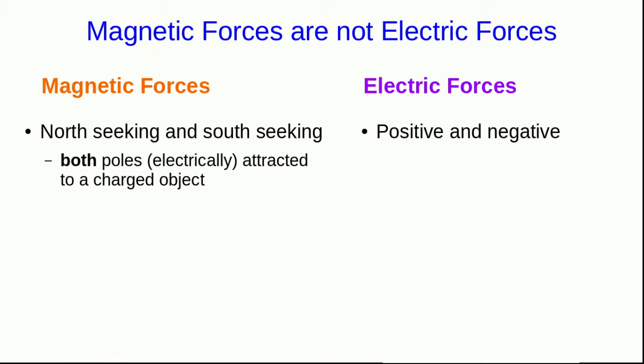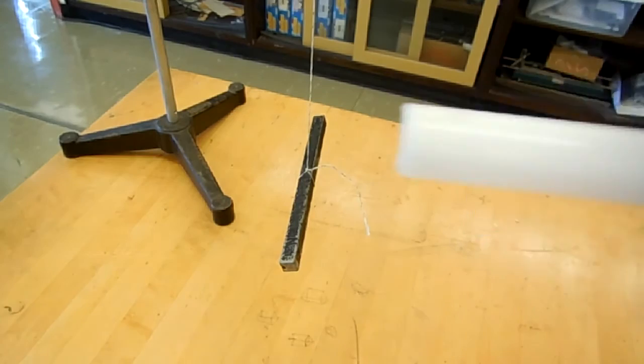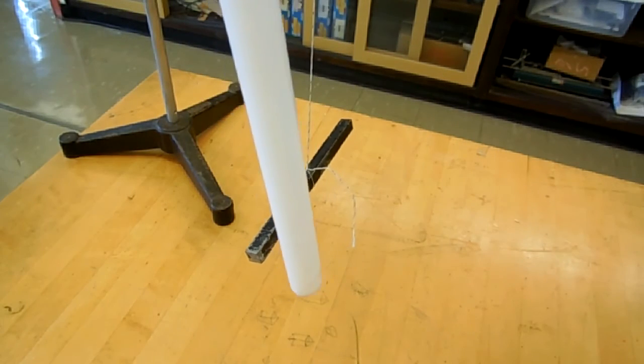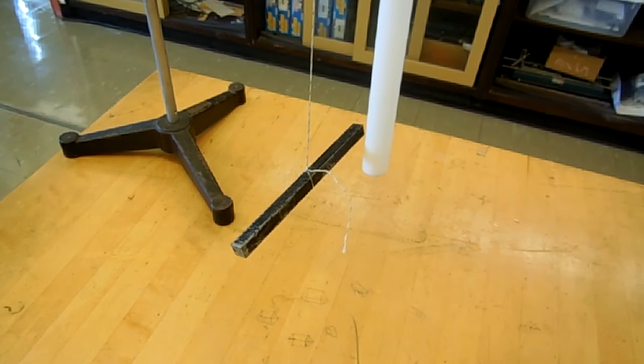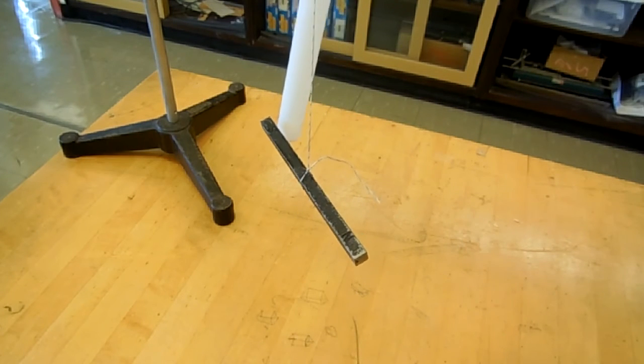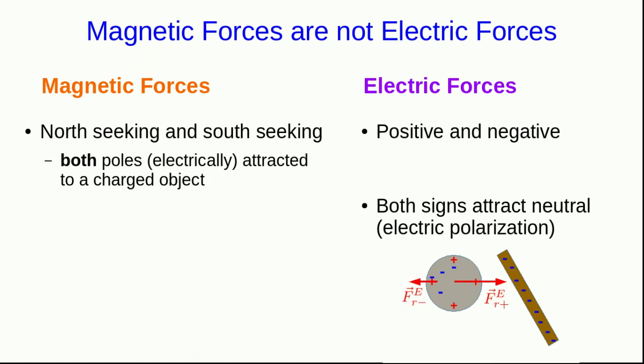However, note that both poles of a magnet are attracted to a charged object. That's because that attraction is just the familiar polarization of the magnet, the electric polarization. And so this attraction isn't a magnetic force, it's an electric force. It's occurring because both signs of charge attract neutral objects by polarization, and the magnet is neutral.